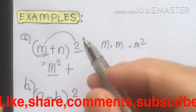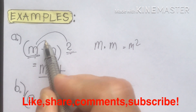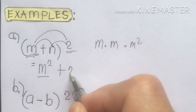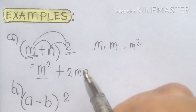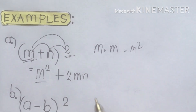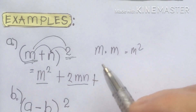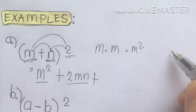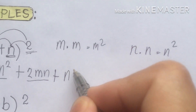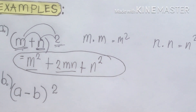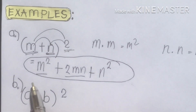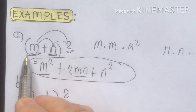Next, plus the product of the two terms: m times n, so we have m times n times 2, the result is 2mn. That means you multiply the first term and second term, then multiply by two. The result is 2mn, plus the second term: n times n gives n squared. So the final answer for letter A, (m + n) squared, is m squared plus 2mn plus n squared.